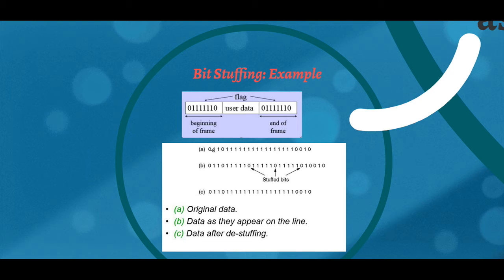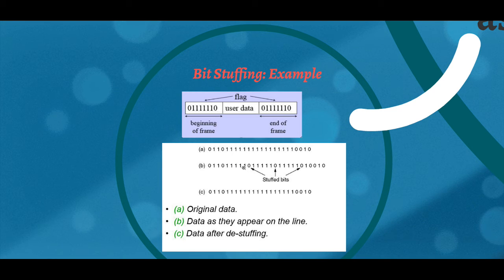In the first stream, if the sender's Data Link layer finds five consecutive ones, it adds a zero. We can see here in our original data there are consecutive ones, and after stuffing, an extra zero is added. In the stuffed data, we added extra zeros — these are called stuffed bits.